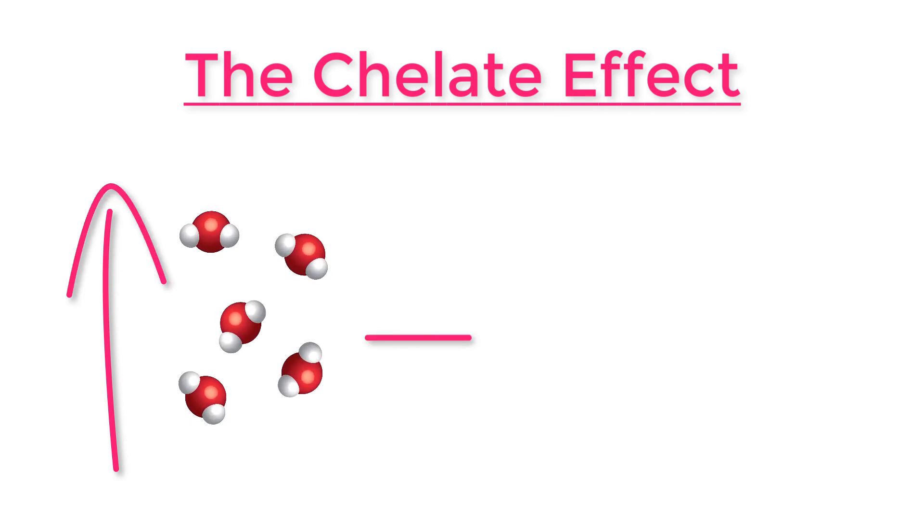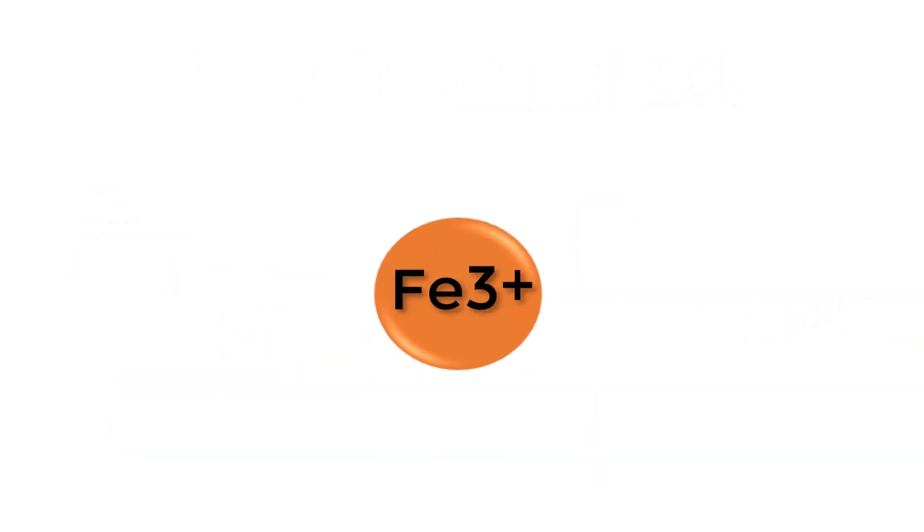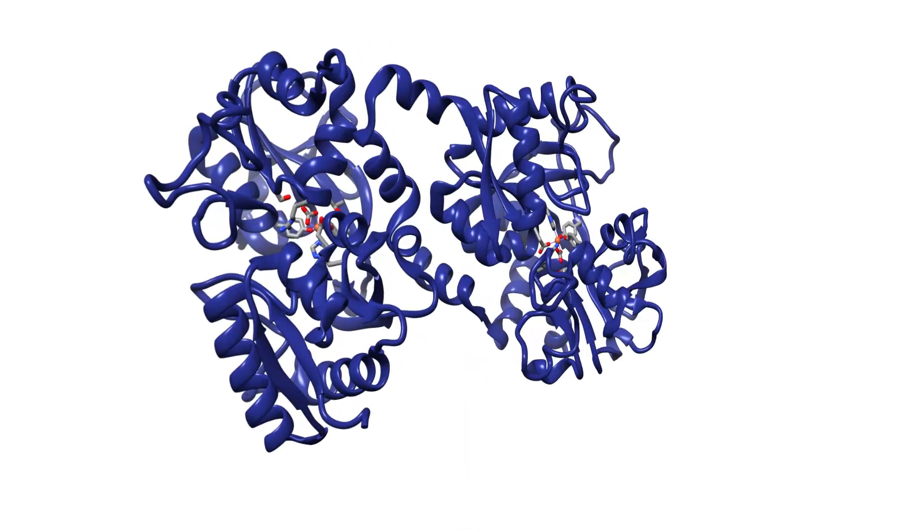The chelate effect states that as the number of individual molecules in a system increases, so does the stability of a complex. The free iron ion is likely bound to six individual molecules while free in the body, but when it binds to lactoferrin...